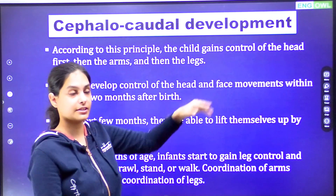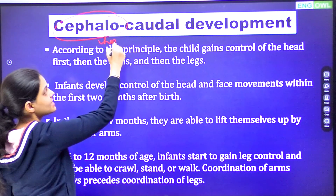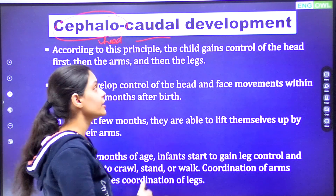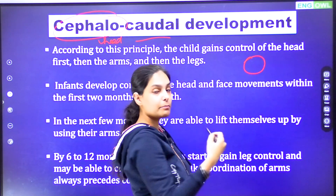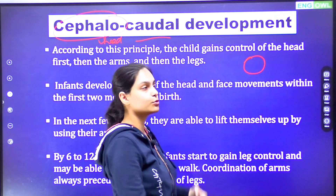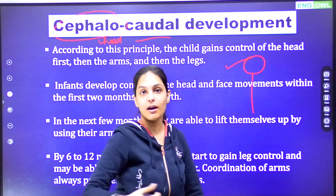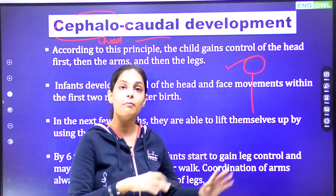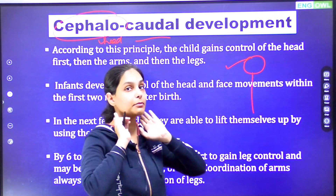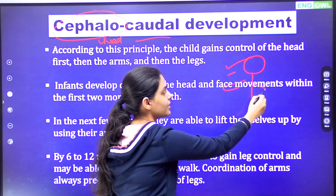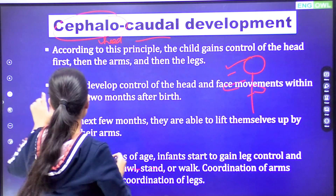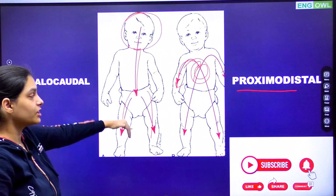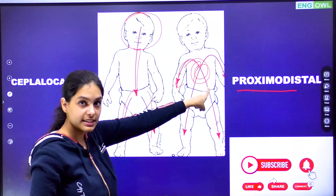The fifth principle is cephalocaudal development. 'Cephalo' means the head and neck area, and 'caudal' means the remaining lower portion of the body. In longitudinal vertical growth, the head and upper body develop first, and then the other parts. Children start by moving their head first and learning to control their head before controlling other body parts. So development proceeds from top downward — head first, then lower body, towards the periphery. In proximodistal, development goes from center to periphery; in cephalocaudal, development goes from head downward.